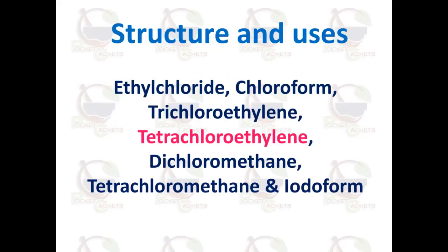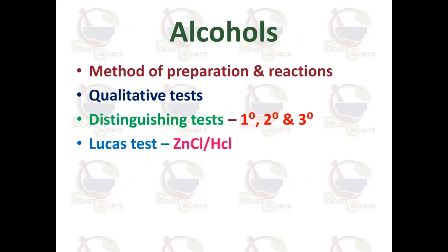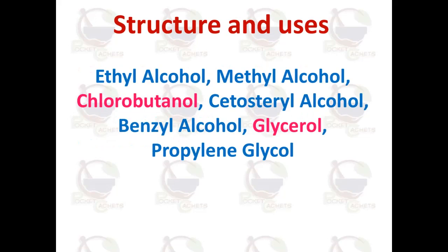Derivatives of alkyl halides — including tetrachloroethylene — their uses and structure are important. For alkyl halides, the method of preparation and reactions are important. Qualitative test questions ask how to distinguish primary, secondary, and tertiary alkyl halides. The Lucas test is used to distinguish them — include the reagents zinc chloride and HCl, specify the reaction, and include the results for primary, secondary, and tertiary alkyl halides in your answer.